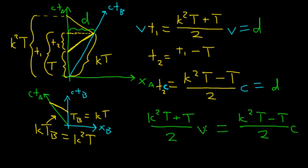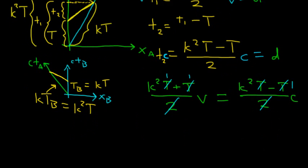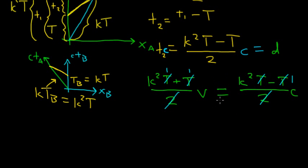So let's see if we can take this equation and solve for k. Well, we're going to notice that we can just multiply both sides by two. So those cancel out. We can divide both sides by t because each term has this common factor t. So that just goes to one. So if you take this equation, we're getting k squared plus one, all that times v, equals k squared minus one times c.